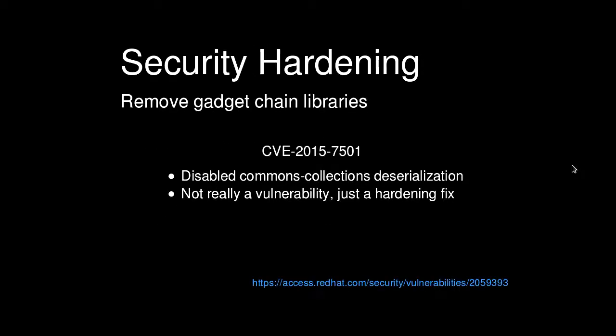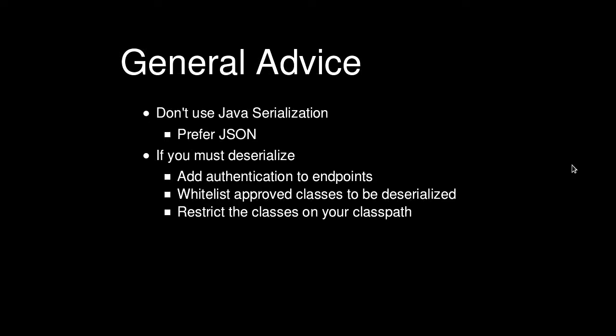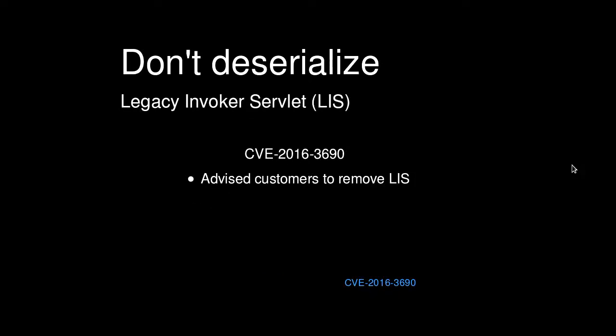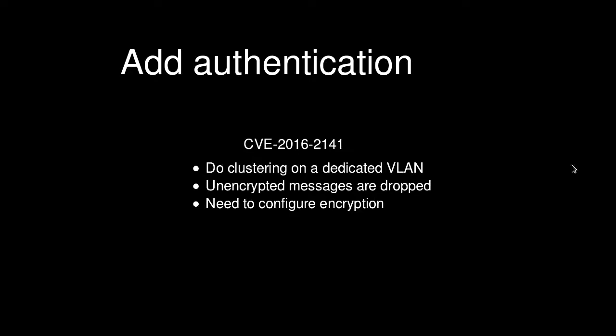How can we prevent it in general? Don't use Java deserialization — it's pretty nasty. Prefer some other object notation like JSON. If you must deserialize, then trust your producers, add authentication to your endpoints, whitelist if you don't trust your producers, and restrict the classes you have on your classpath so there are fewer options for attackers to create gadget chains. For that particular clustering vulnerability CVE-2141, you need to configure authentication when you set up clustering — there are a few extra steps with that one.